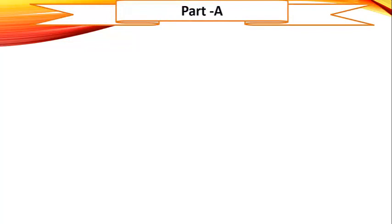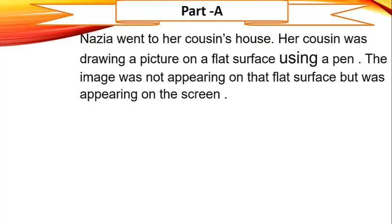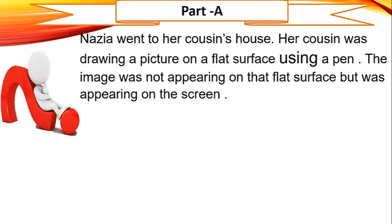In part A of this exercise, Natsia is a student who went to her cousin's house. Her cousin was drawing a picture on a flat surface using a pen. The image was not appearing on that flat surface — it was appearing on the screen. Now, students, can you name the device being used?